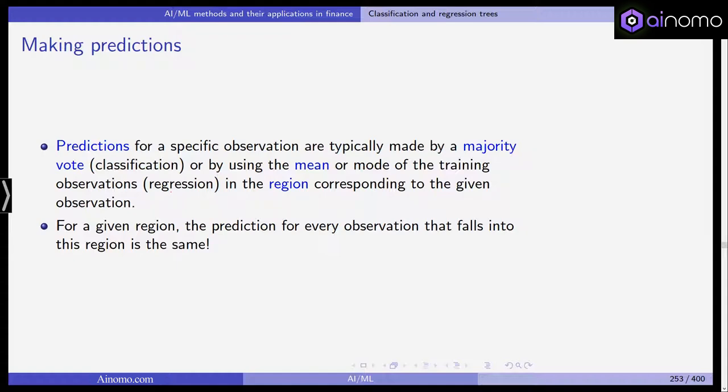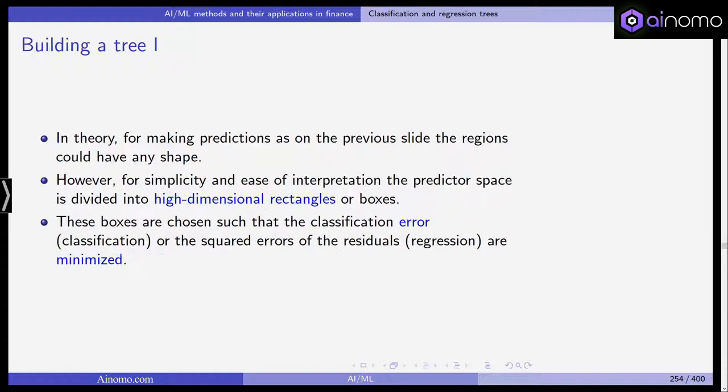Now how do we do predictions? Well for a specific observation they are typically made by a majority rule, by a majority vote in classification, meaning if it's more than 50 percent then it's on the right hand side, if it's less than 50 percent then on the left hand side, or by using the mean or mode of the training observations in regression analysis in the region that corresponds to the given observation. And for a given region the prediction for every observation that falls into this region is of course the same and we get the same prediction. How do we build a tree now in theory?